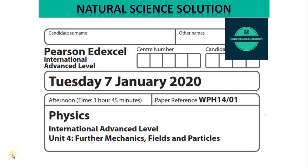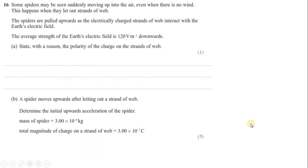Hi, welcome to the video solution for past paper. This is Edexcel IGCSE Physics January 2020, the second video of the series. Let's start question number 16. Some spiders may be seen suddenly moving up into the air even when there is no wind. This happens when they let out strands of web - the spiders are pulled upward as the electrically charged strands of web interact with the electric field. The average strength of Earth's electric field is 120 volts per meter downwards. State with reason the polarity of the charge on the strands of the web.